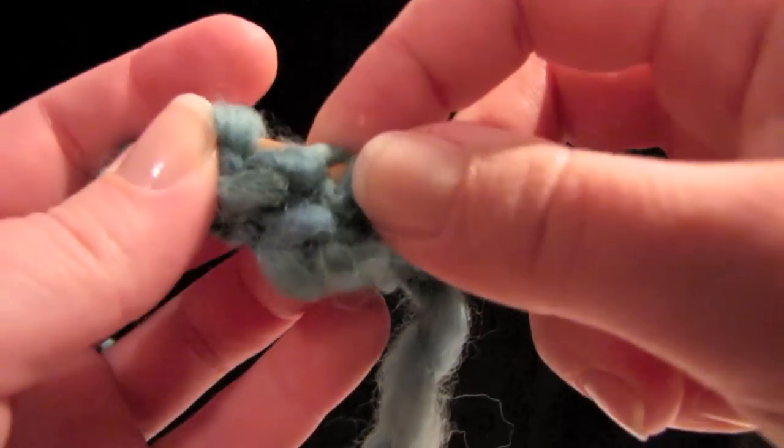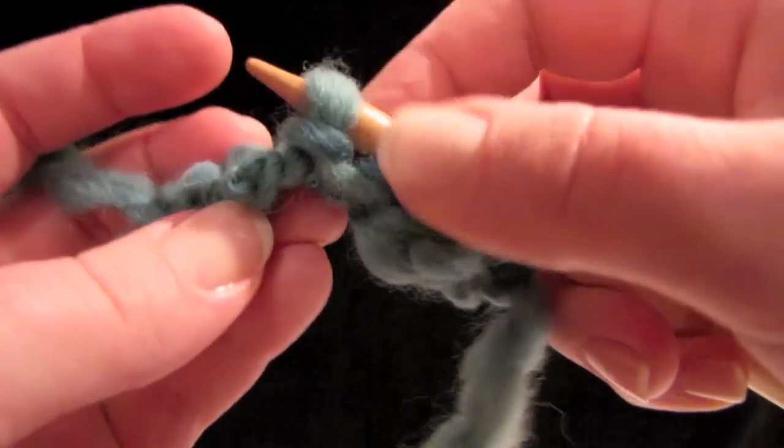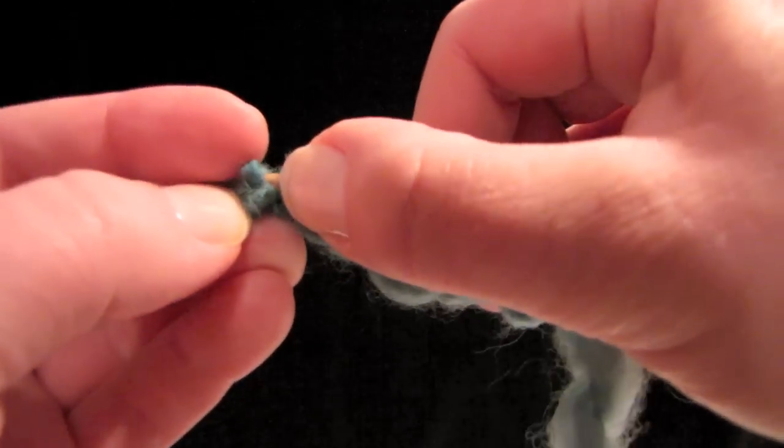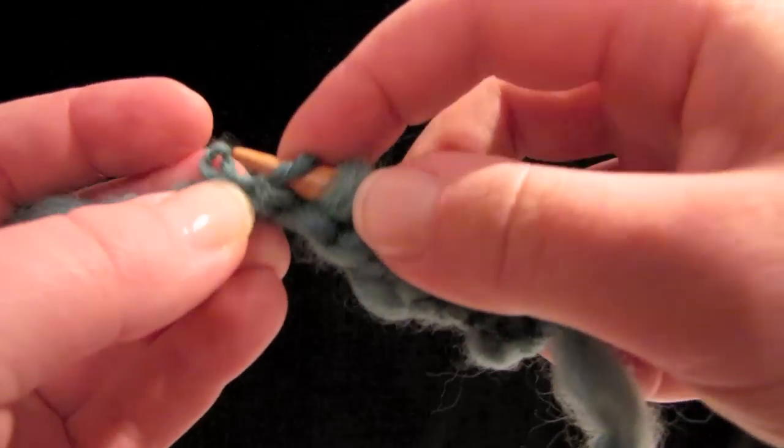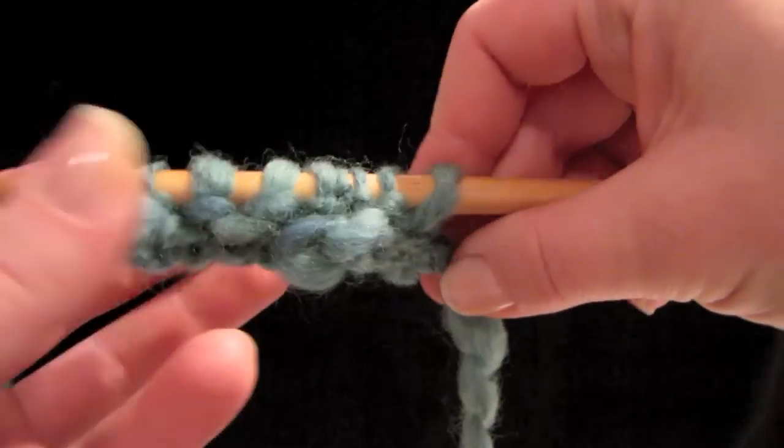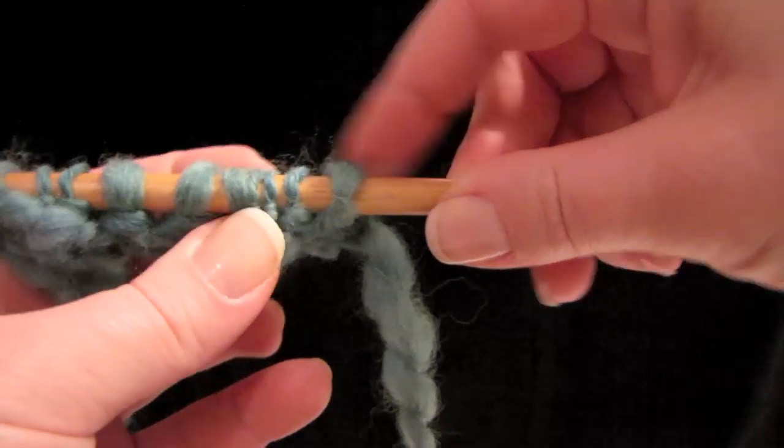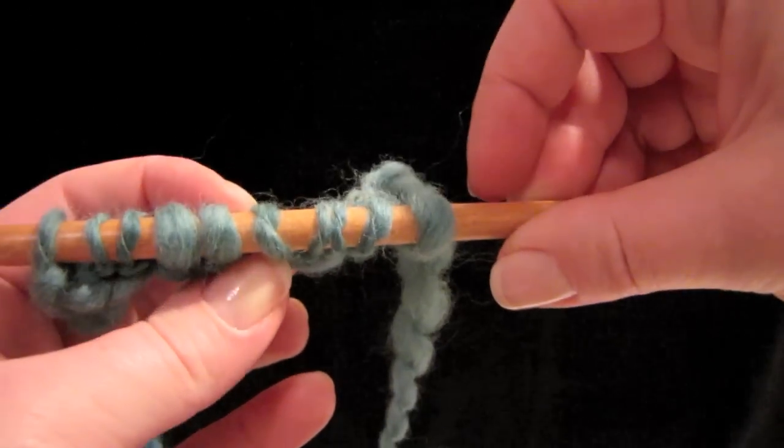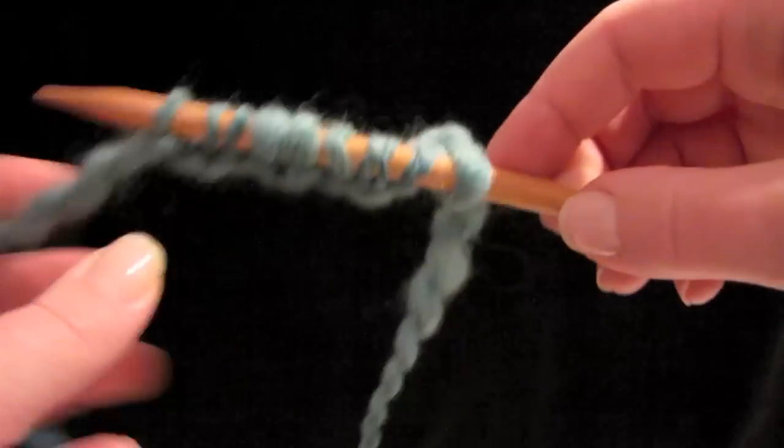And also you can notice that I am not paying attention to the direction, the direction that these stitches are facing. Right now I'm just trying to get the loops on the needle. So, and we've got ten stitches again, which is great. That's how many we started with.